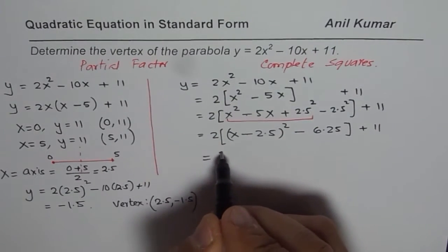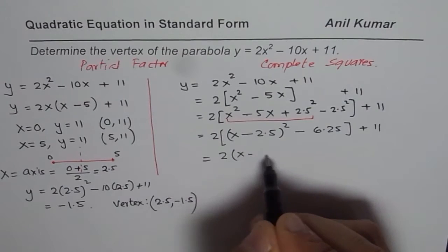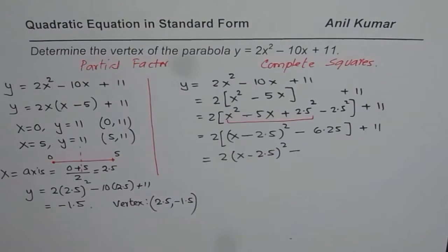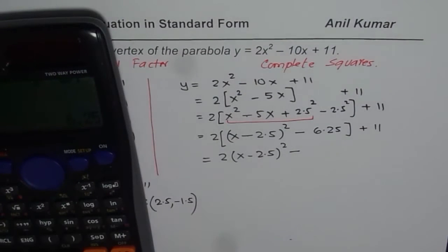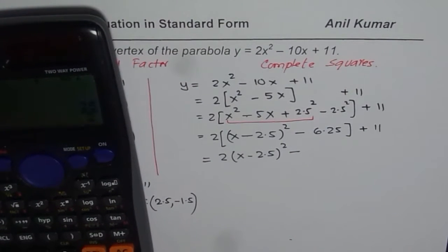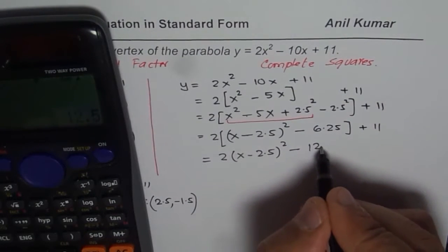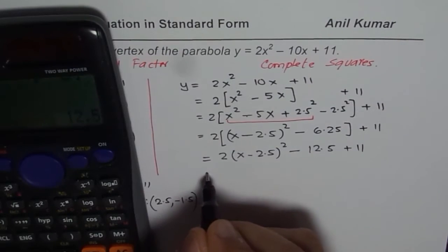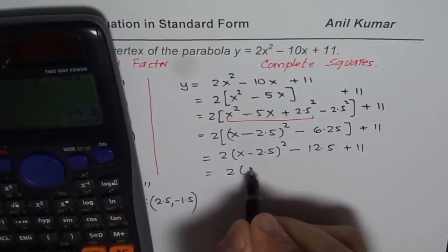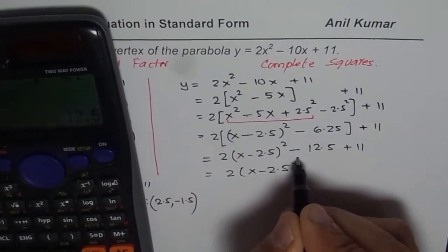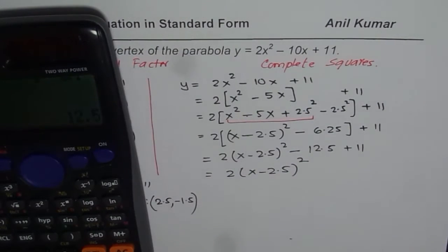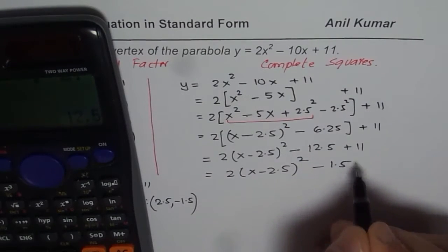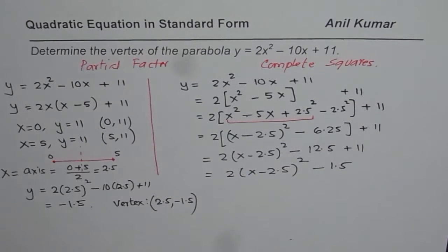So we have 2 times x minus 2.5 whole squared minus 6.25 times 2, which equals in decimals 12.5 plus 11. We can combine these terms. So we get 2 times x minus 2.5 whole squared, this is minus, so when you do that you get minus 1.5.